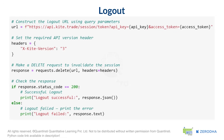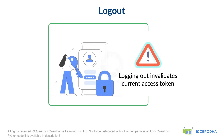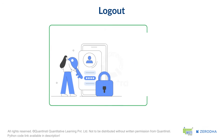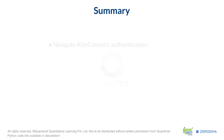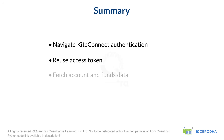Finally, it's good practice to log out when you're done with your session. Logging out invalidates the current access token and ends the active API session. This is crucial for security, especially if others might gain access to your environment, and it helps manage active sessions on the Kite API server. After logging out, any further API calls will fail, and you'll need to go through the login process again to generate a new access token. You have now successfully navigated the Kite Connect authentication process, learned to reuse access tokens, fetch account and funds data, and securely log out.